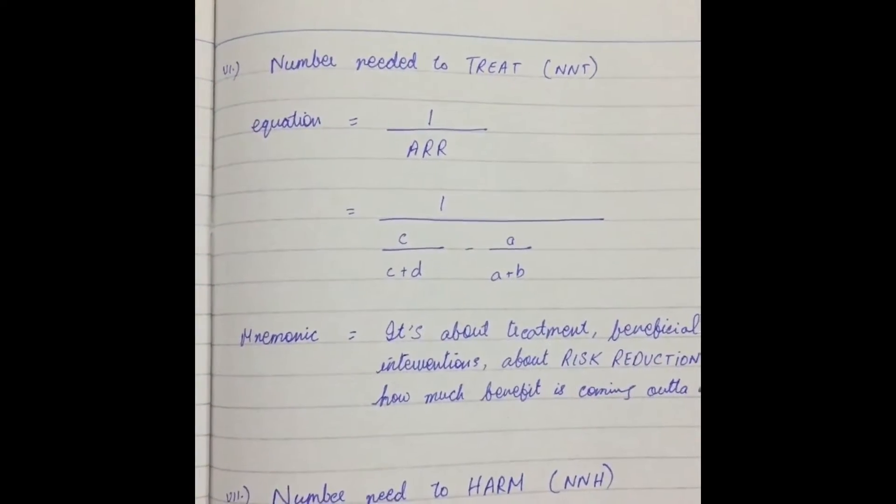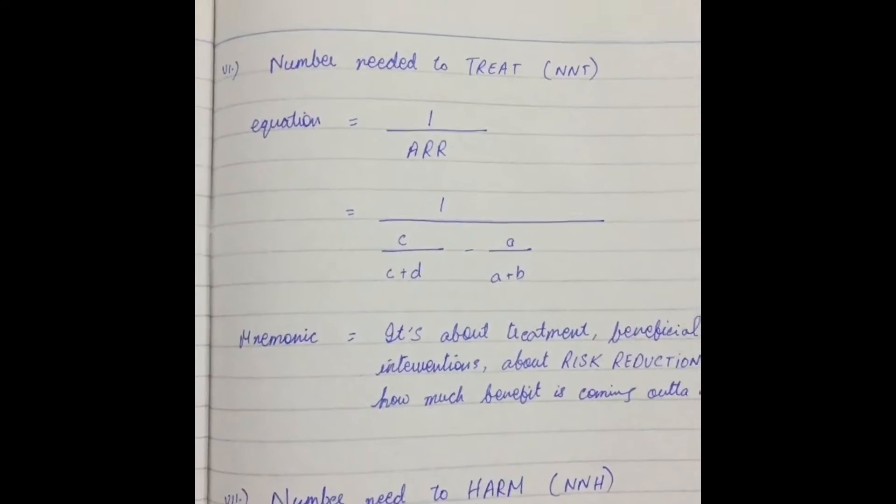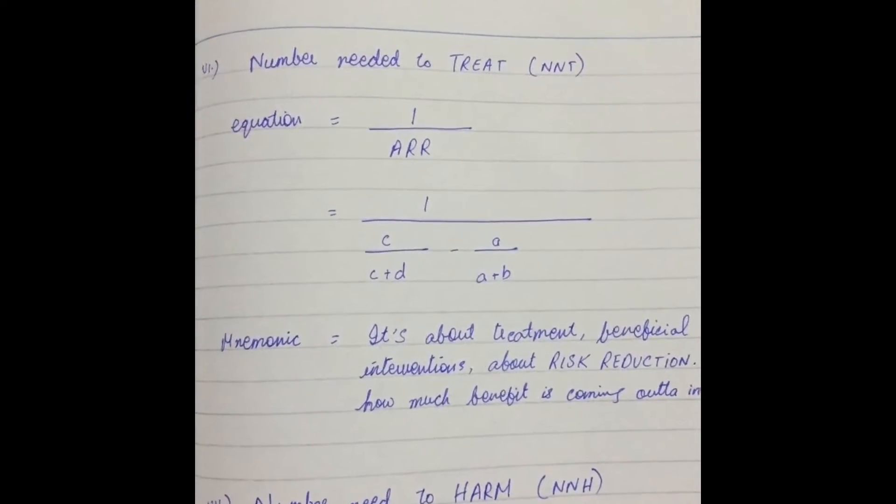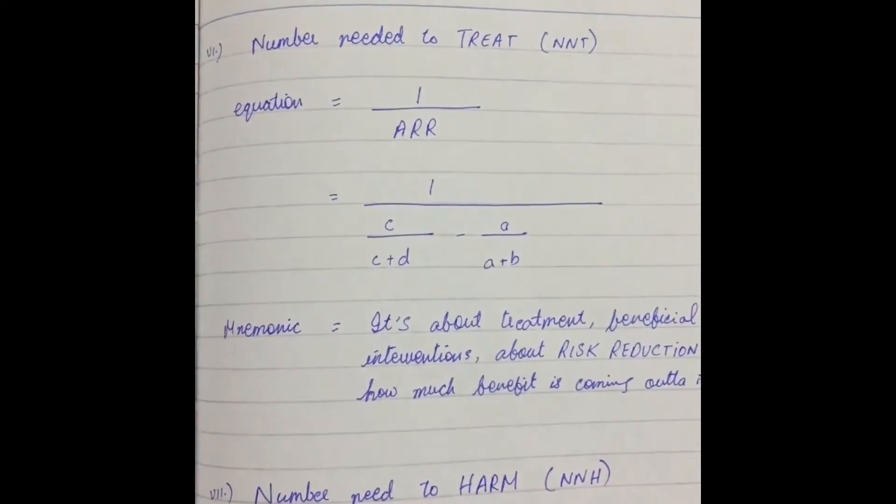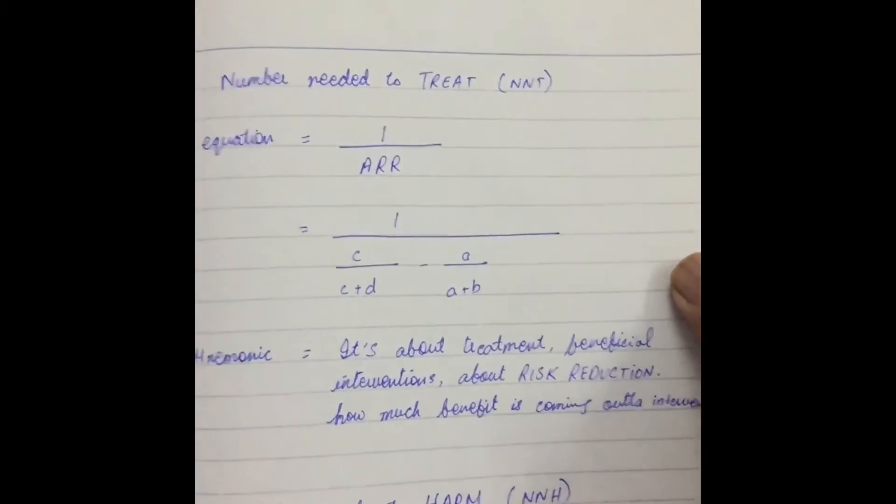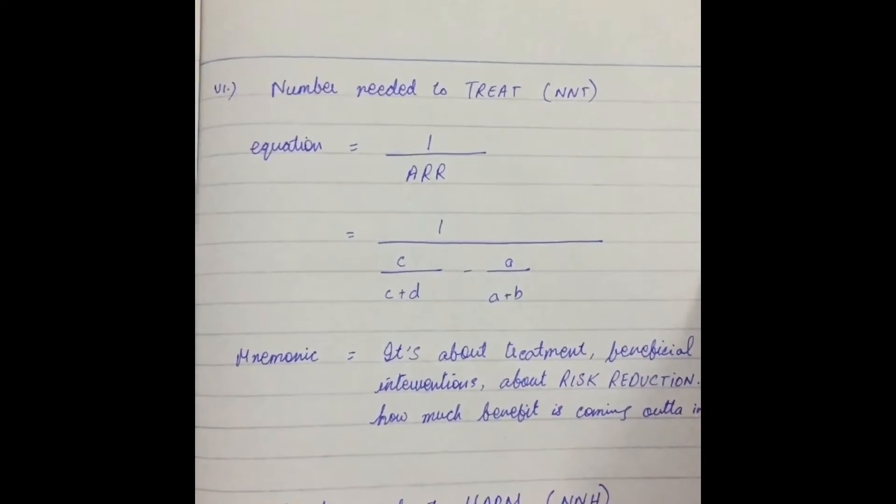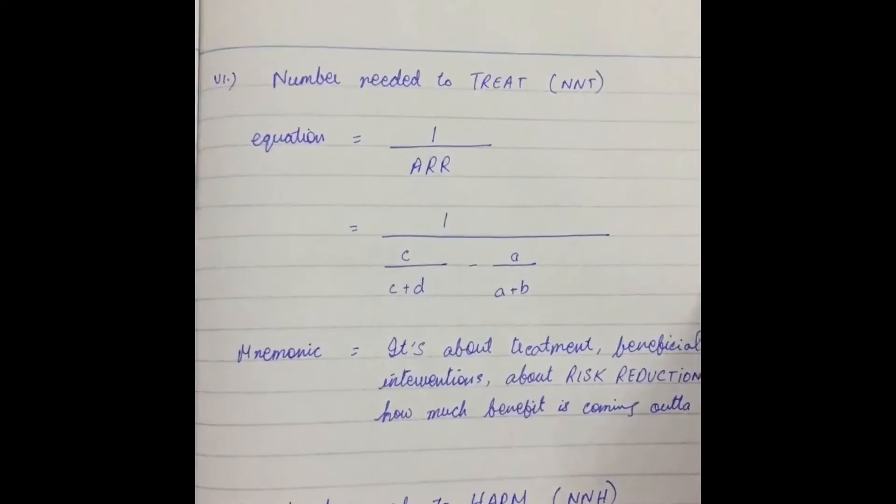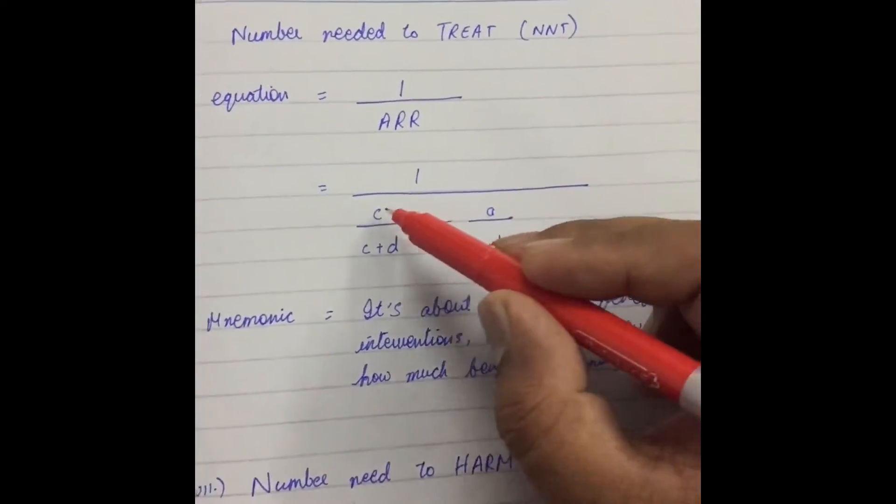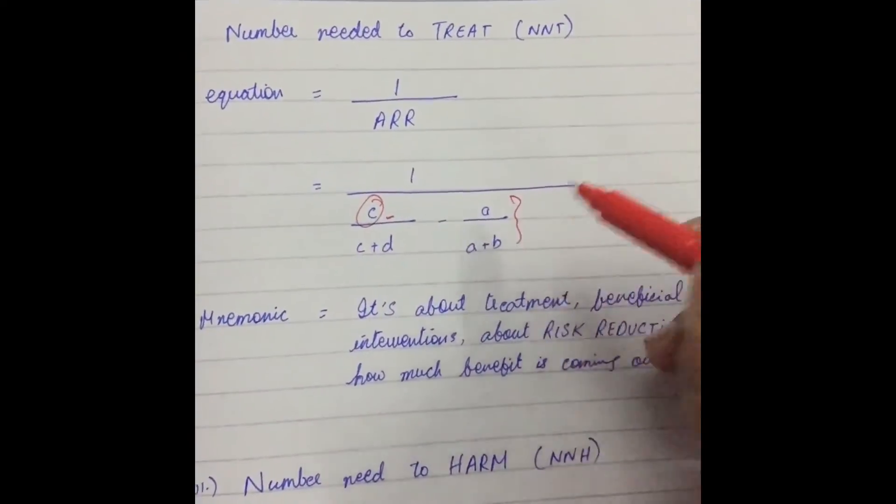Now, number needed to treat. Equation 1 over Absolute Risk Reduction, or 1 over C plus D, minus A, A plus B. It's about the treatment. It's about the Absolute Risk Reduction. It's about the Absolute. The Absolute with a C. So, subtract C from the rest.